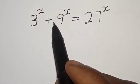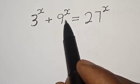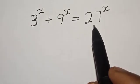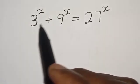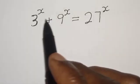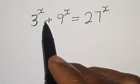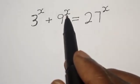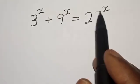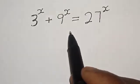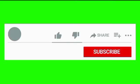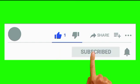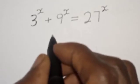3 raised to power s plus 9 raised to power s is equal to 27 raised to power s. Hi everyone, welcome to my class. In this class we want to find the value of s from this given equation: 3 raised to power s plus 9 raised to power s is equal to 27 raised to power s. Before we proceed, please don't forget to like, share, comment and subscribe.